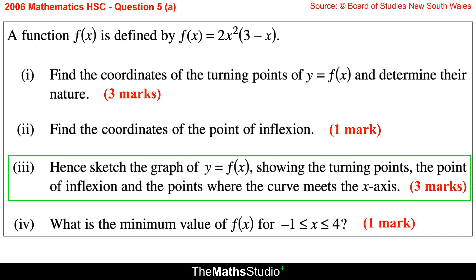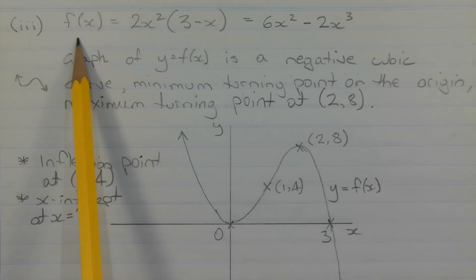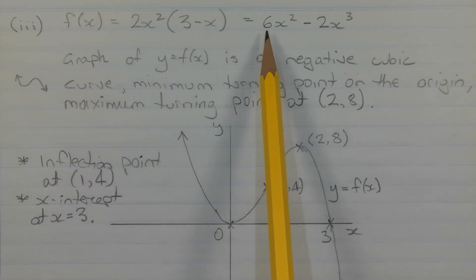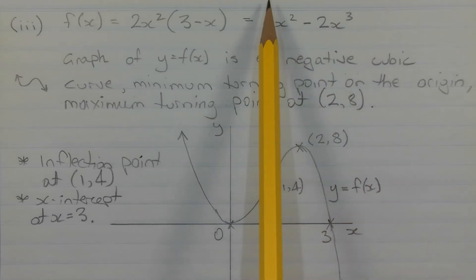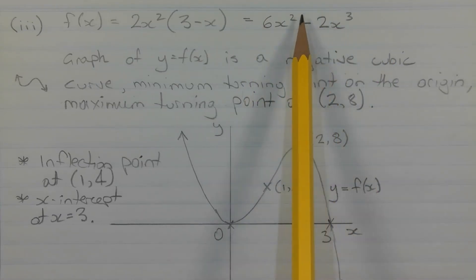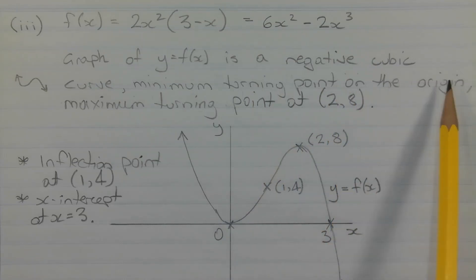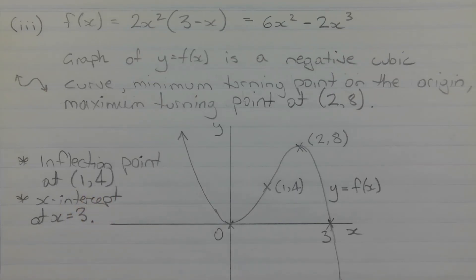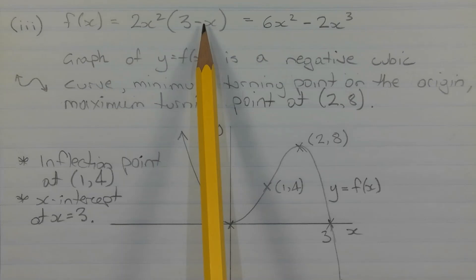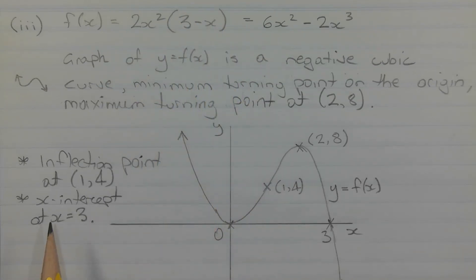Part 3: Hence sketch the graph of y = f(x) showing the turning points, the point of inflection, and the points where the curve meets the x-axis. f(x) = 2x²(3 − x) expands to 6x² − 2x³. The degree is 3 and the leading coefficient is −2, so the graph is a negative cubic with a sideways S-shape. Solving 2x²(3 − x) = 0, we find an x-intercept at x = 3, with x = 0 already known.